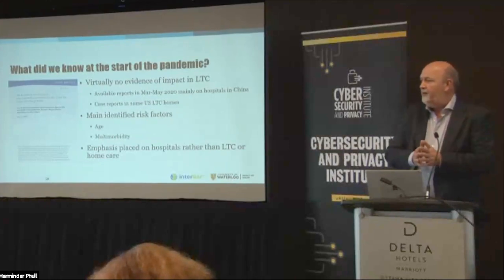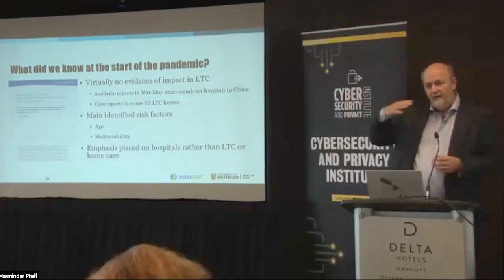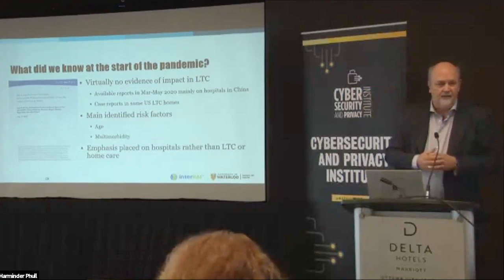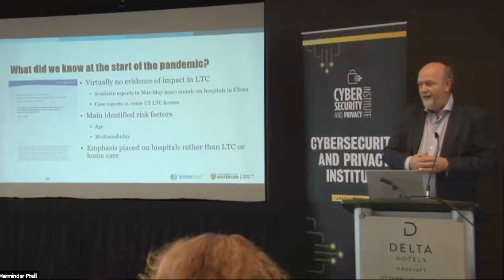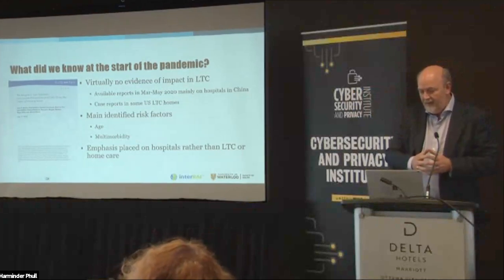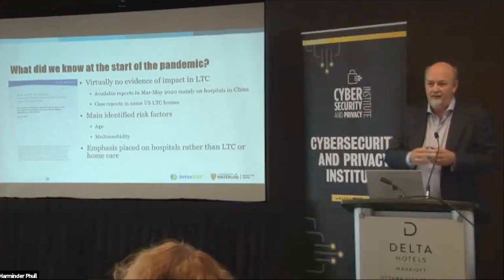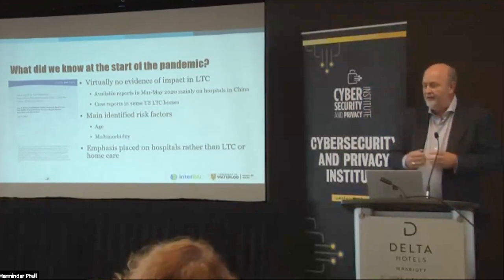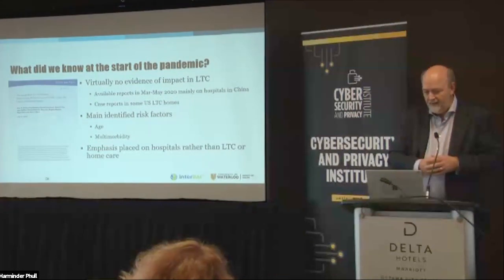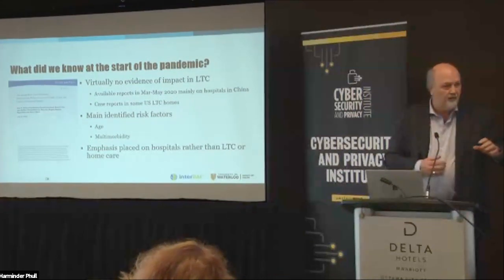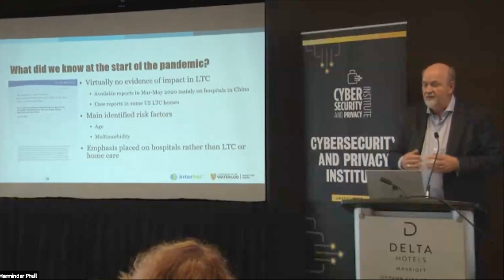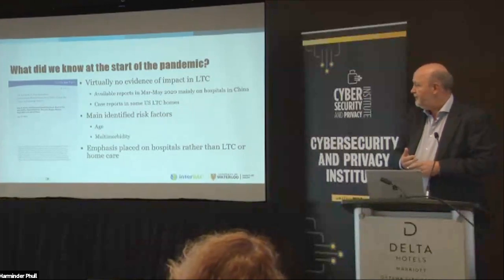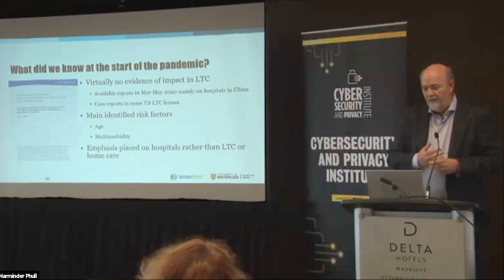The example I want to talk about is COVID in long-term care. I go back to the second week of March 2020. The pandemic hadn't been declared yet as having come to the shores of Canada, but we knew things were happening. We weren't in lockdown yet. At that point, we had virtually no evidence of what the impact of COVID was going to be in long-term care settings. The only data we really had were data coming from China focused in acute care hospitals and a few case reports in some long-term care homes, and all we knew was that age and multimorbidity were likely to be important risk factors.